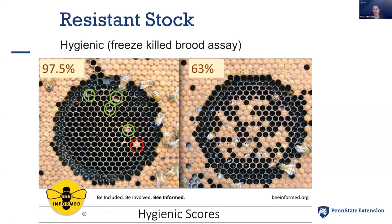Another thing to look for is hygienic behavior — a way of the bees removing dead pupae. Here you see two different frames of brood with a beautiful brood pattern. The scientist or beekeeper performed a freeze-killed brood assay: you put a three-inch tube over some capped brood, pour in liquid nitrogen and let it boil off, effectively killing the developing bees under those cappings. Then put the frame back in the hive for two days and see how much they've removed. On the left, a really great hygienic colony removed nearly every single dead pupa; on the right, only about 63% were removed — not really hygienic, and therefore not considered mite-resistant stock.